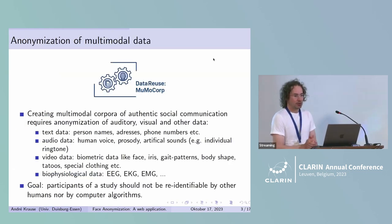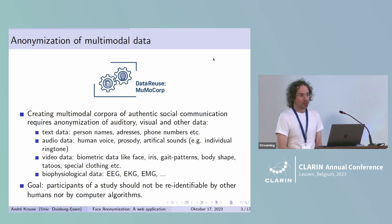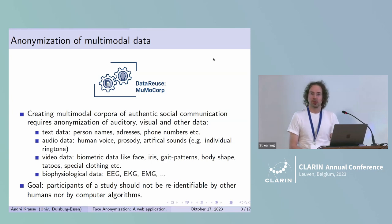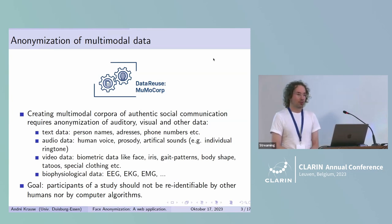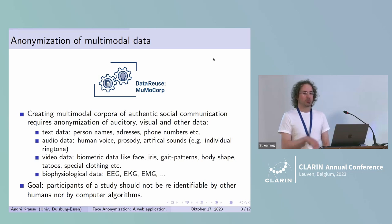Creating a multimodal corpus requires anonymization of auditory, visual, and other data. For text data, you need to anonymize the person names, addresses, phone numbers, etc. That is well known.